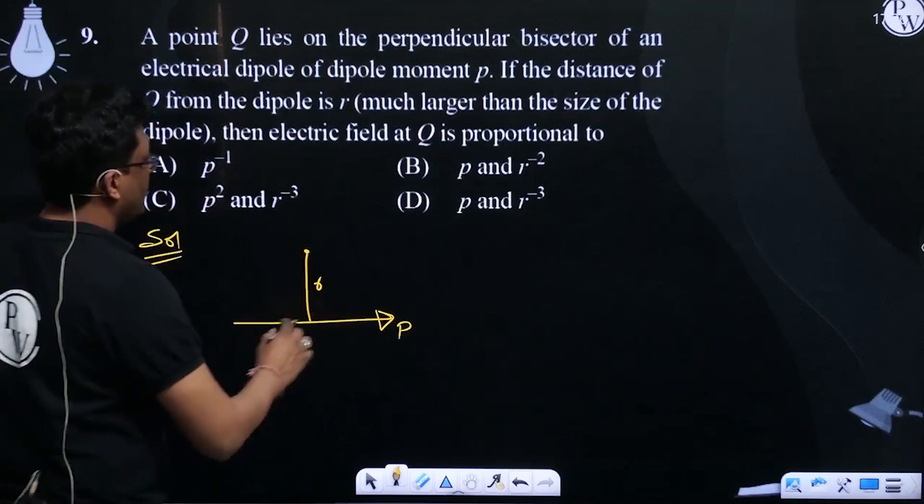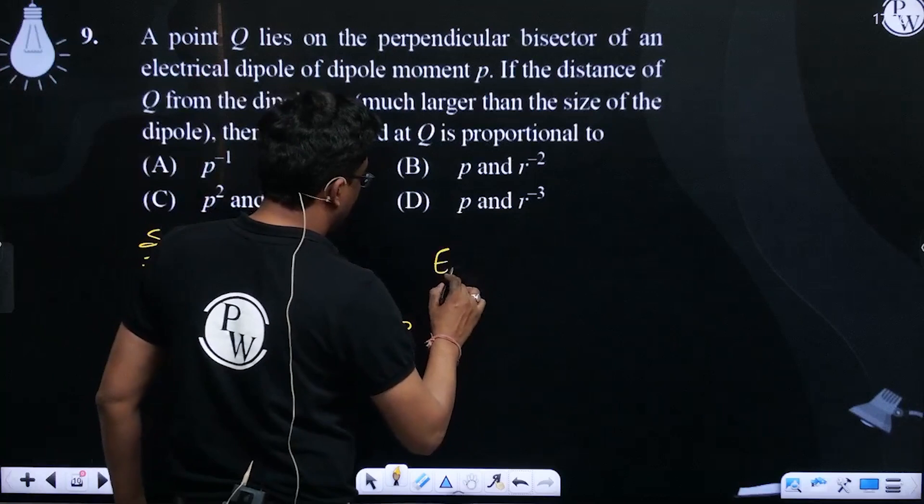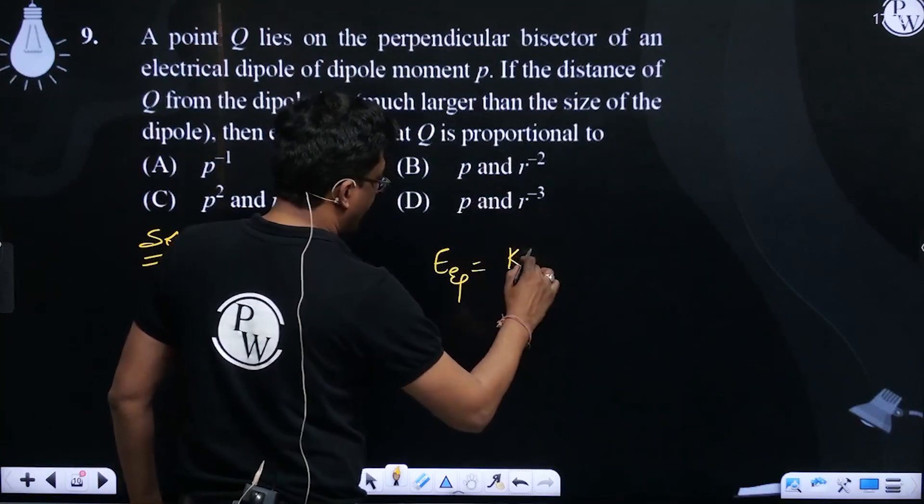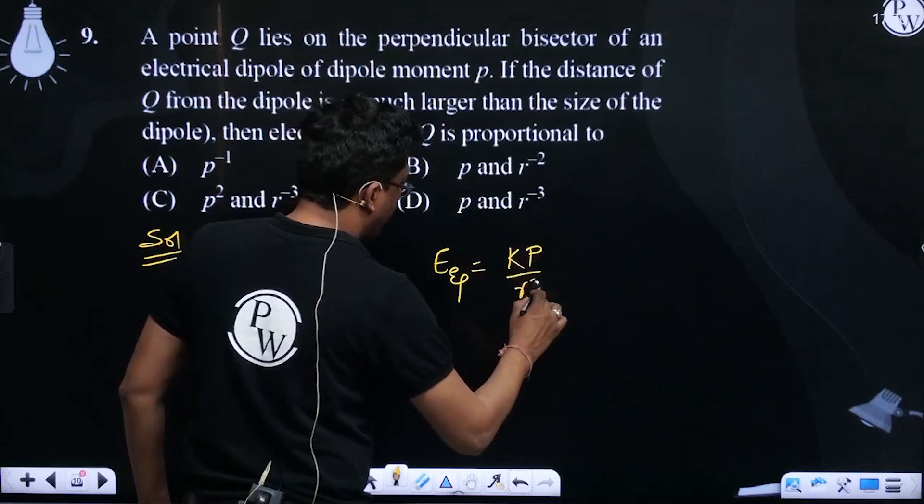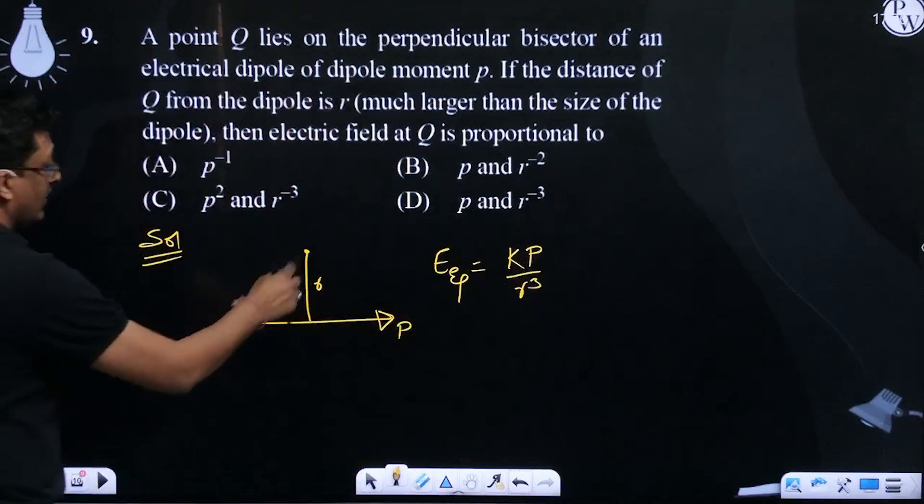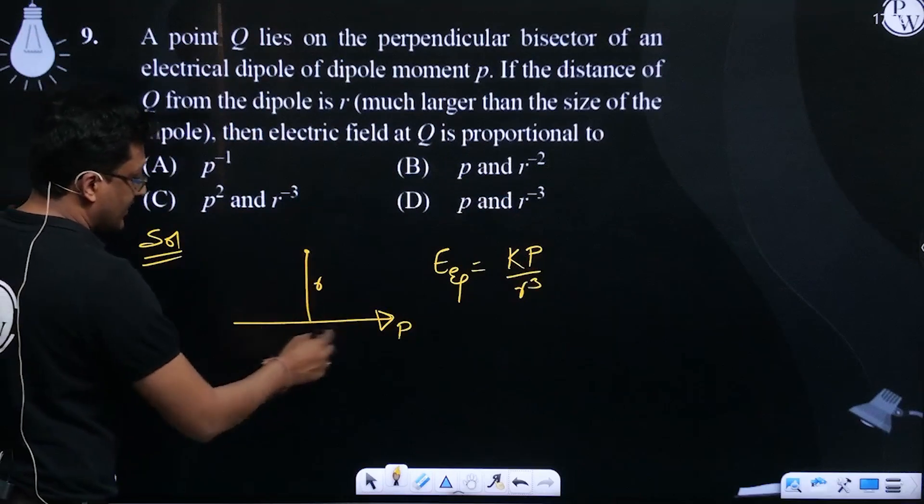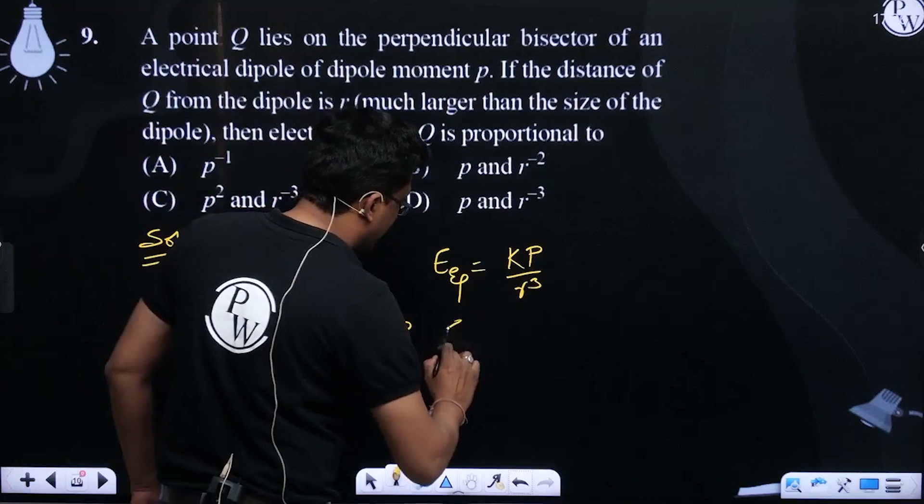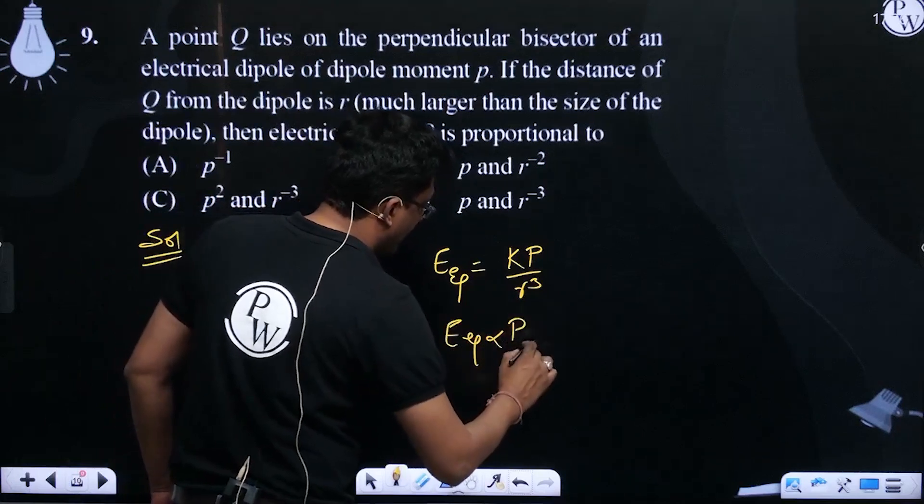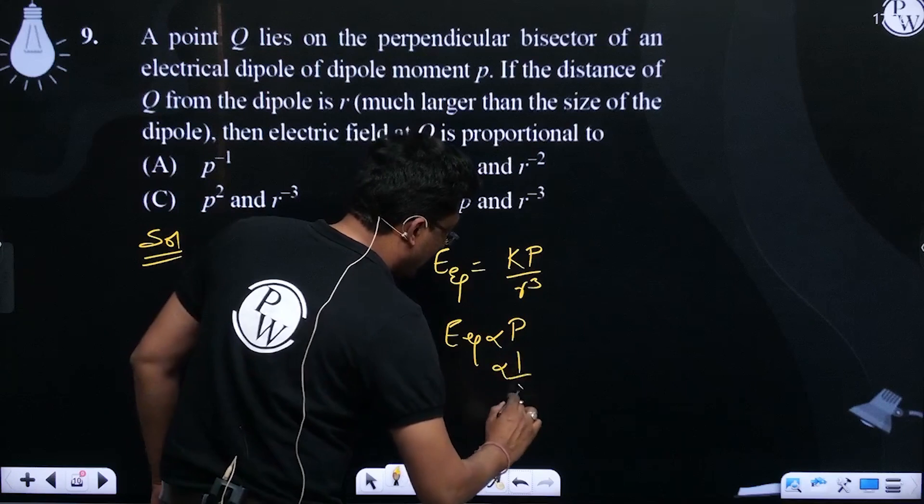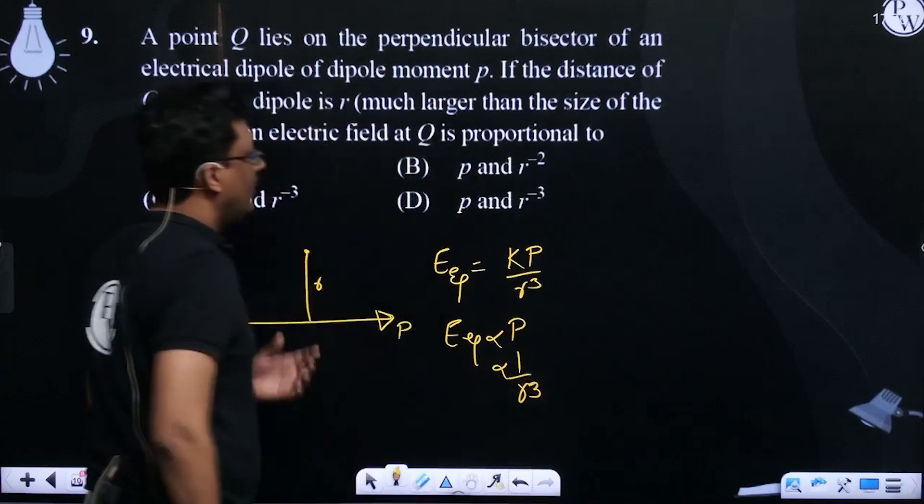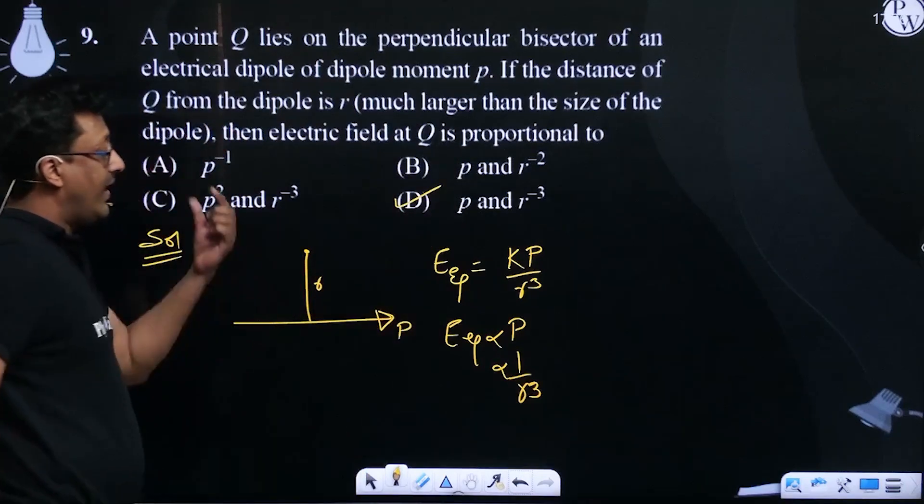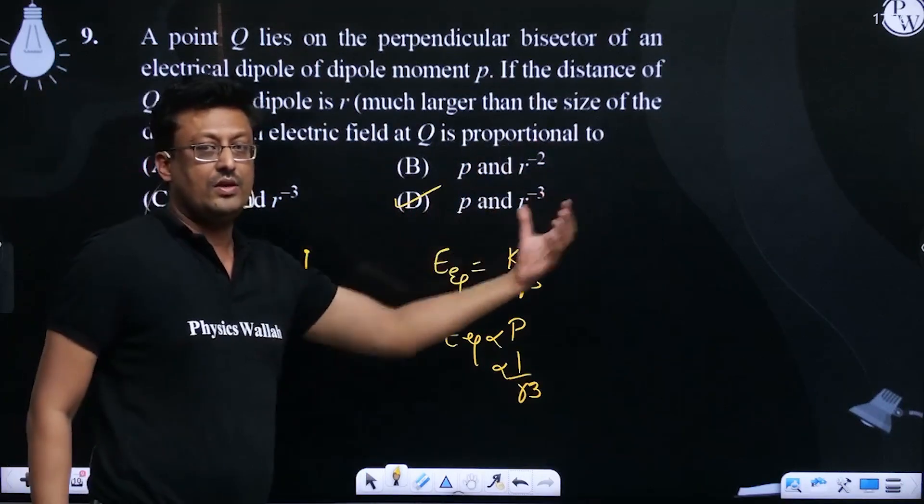At the equatorial point, the electric field is KP by R³. When R is much greater than the distance between the two charges, E_Q is proportional to P and inversely proportional to R³. From the concept in the statement, option B - directly proportional to P but inversely proportional to R³ - is correct. This was your question number 9.